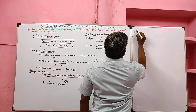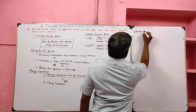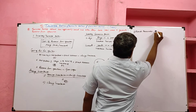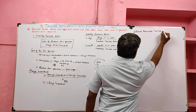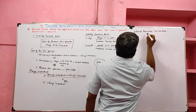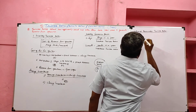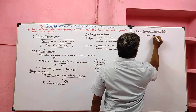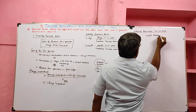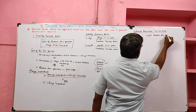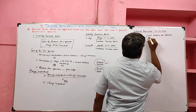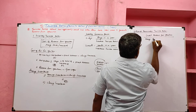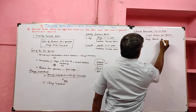The second ratio we are going to learn is accounts receivable turnover ratio. The formula is: credit revenue from operations divided by average accounts receivable.